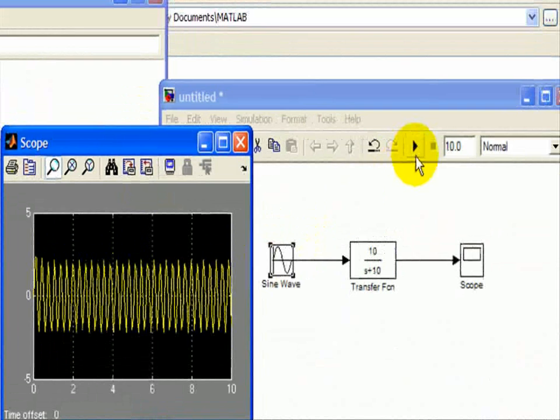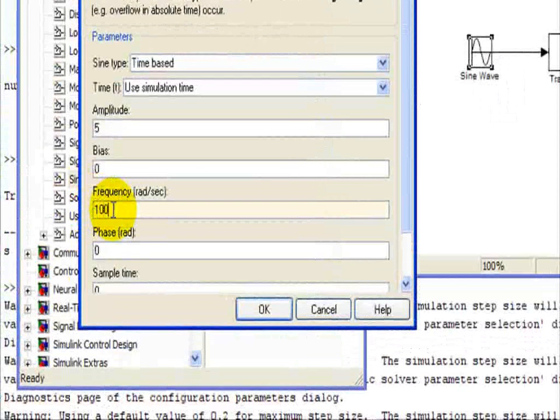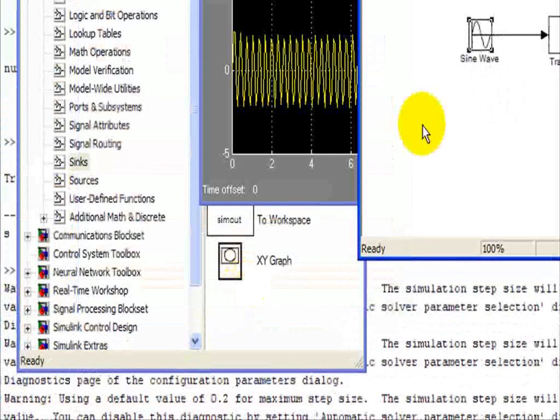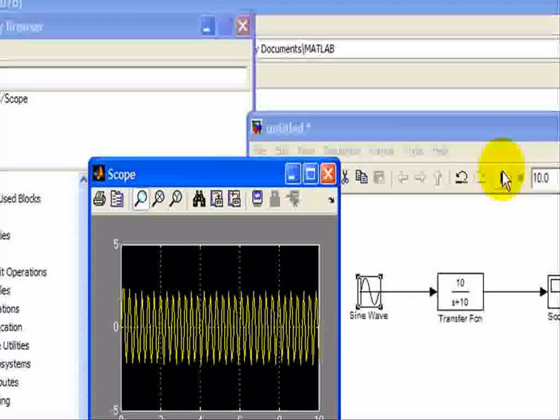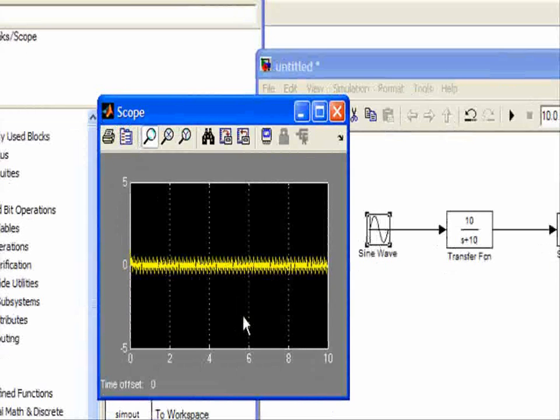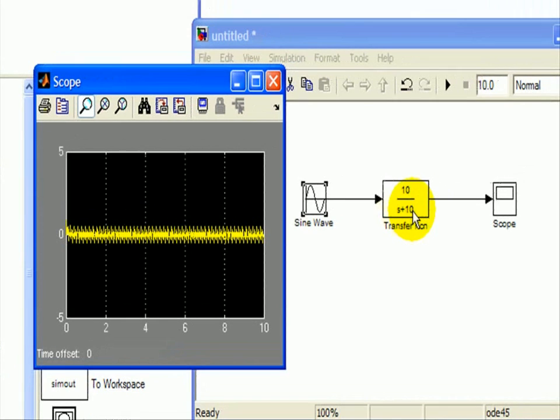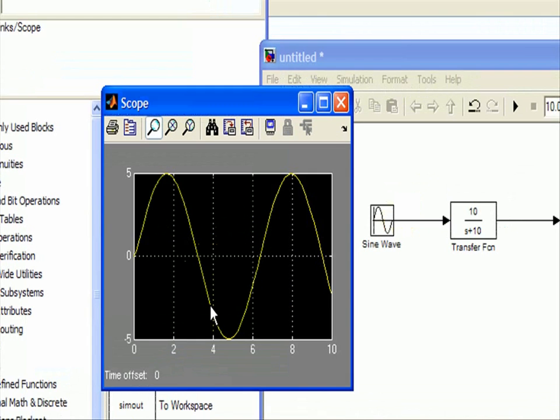So, we'll change it to 100 radians per second as the input frequency, and we should see our output decreases even more. So, hopefully, this demonstrates that this transfer function, as we saw with the RC circuit, does exhibit the effects of a low-pass filter where it passes frequencies below 10 radians per second and rejects frequencies above 10 radians per second. That concludes this demonstration using Simulink.